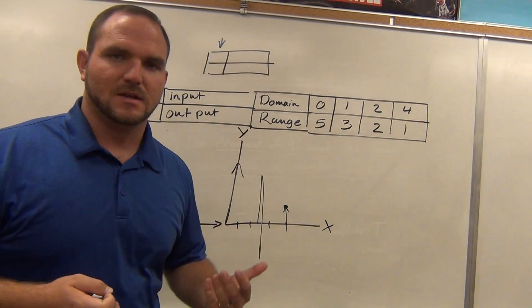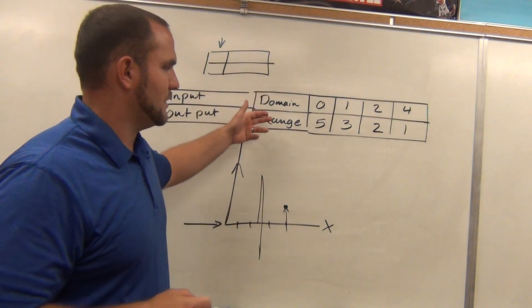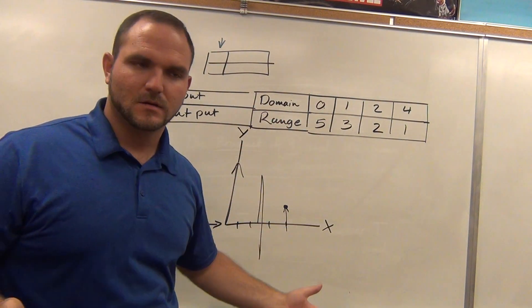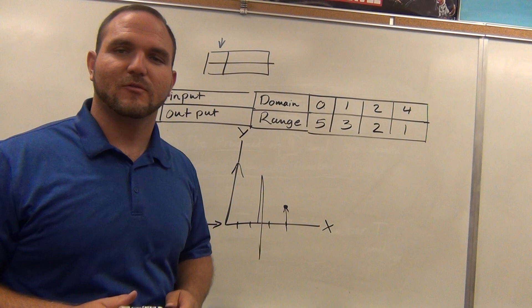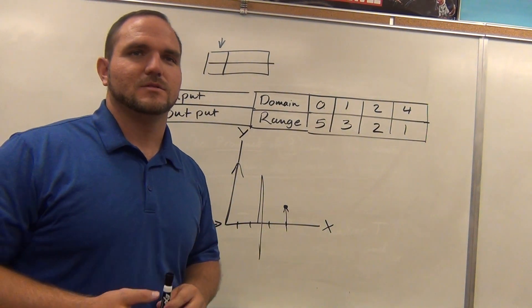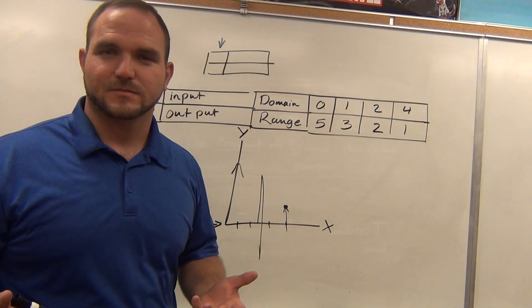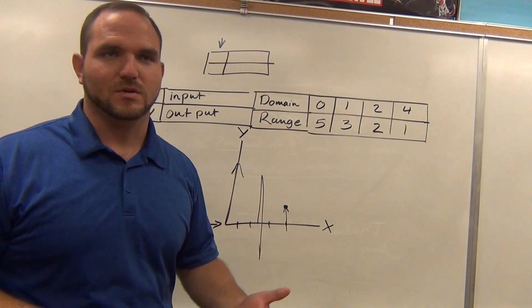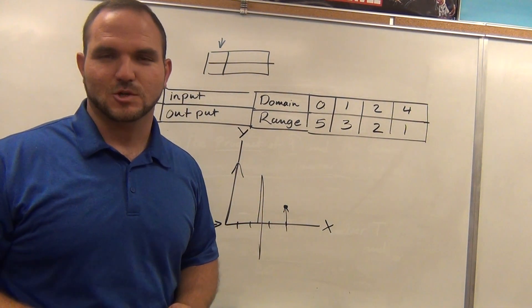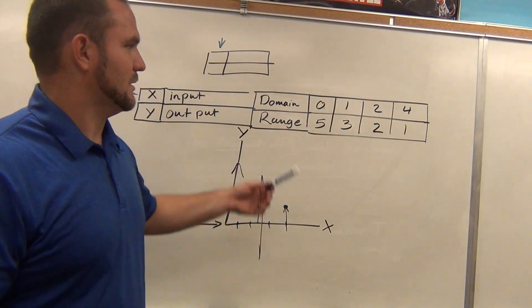So if you get mixed up on which one is on top and which one is on bottom and being able to tell, domain and range go alphabetically. So domain comes first because it starts with a d. So that is your x. That is your input. So domain comes first.